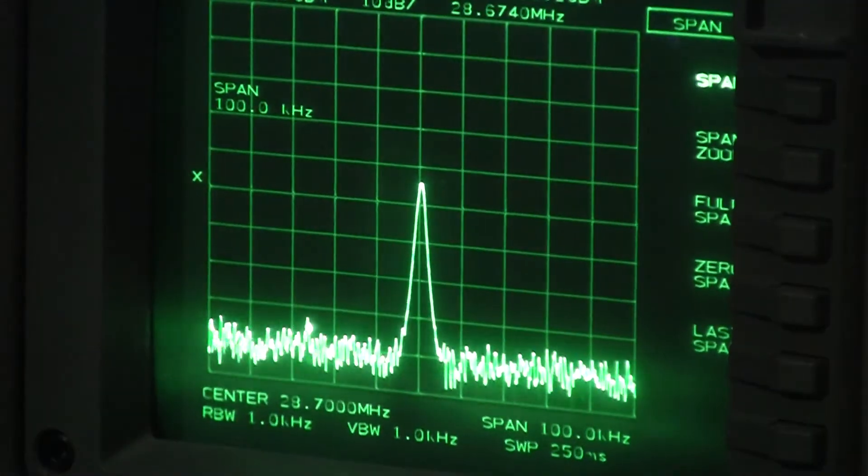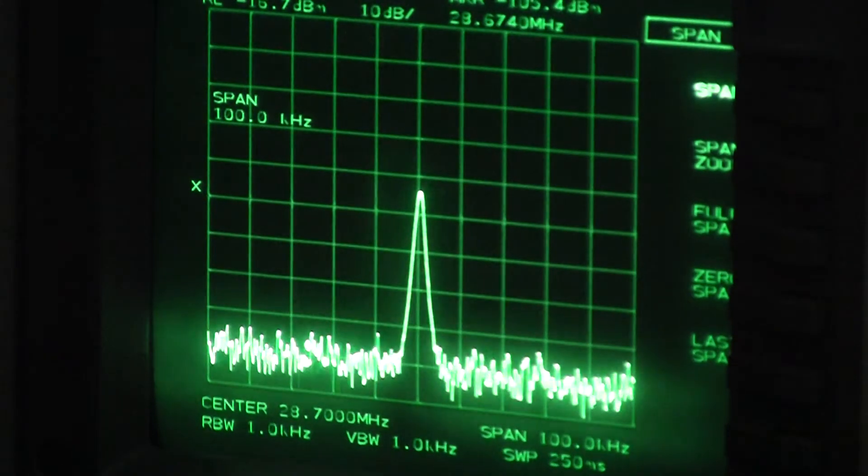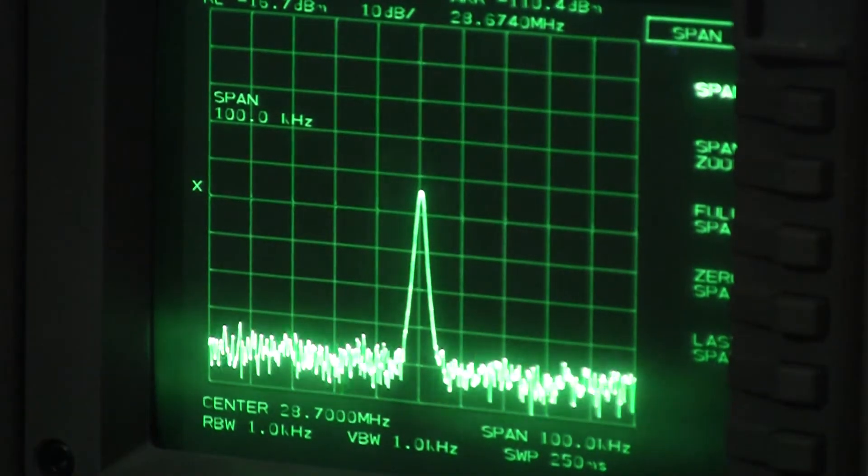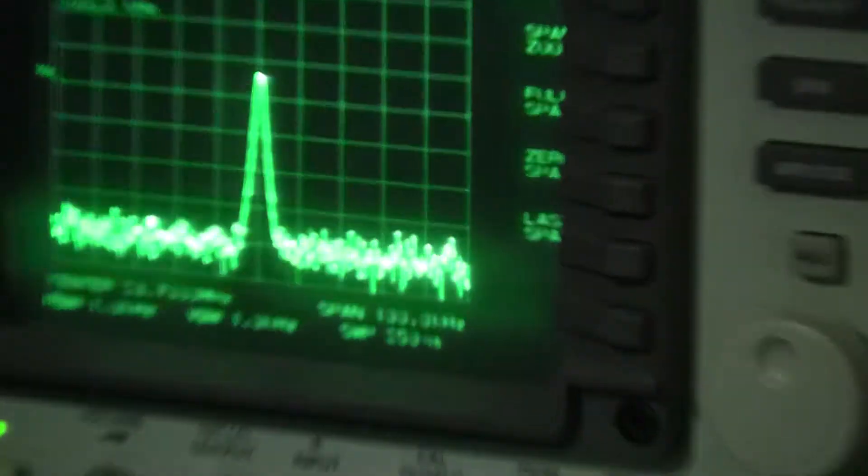But I'll just purposely de-neutralize it, and you'll see what happens when I tweak the trimmer inside here. There's a little hole in the top of the PA compartment made for a little trimmer tool. And we can look at the resulting output.